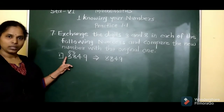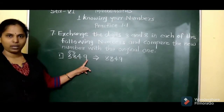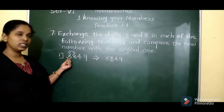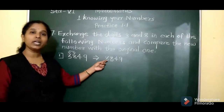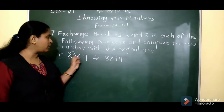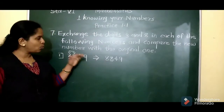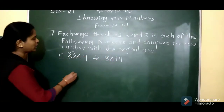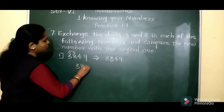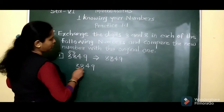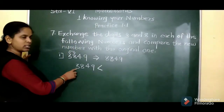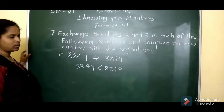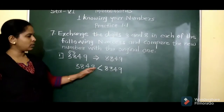The original number is 3,849 and the new number is 8,349. At the thousands place, the original has 3 and the new number has 8. Since 8 is greater than 3, the new number is greater than the original. So we write: 3,849 is smaller than 8,349.